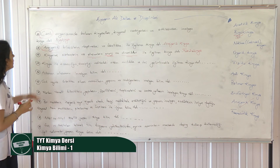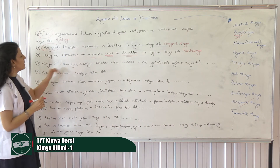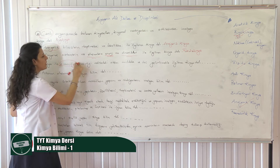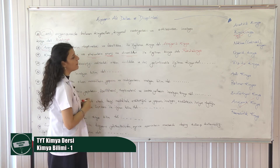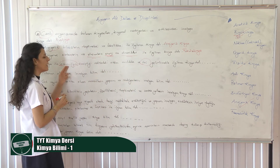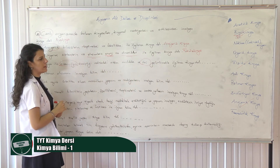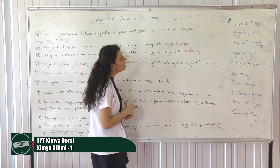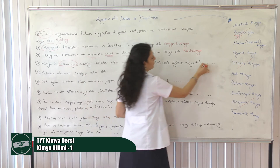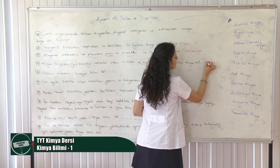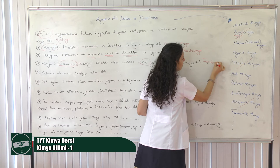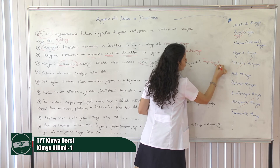Kimya ile eczacılığın kesiştiği noktada etken maddeler ve ilaç geliştirmekle ilgili bir kimya dalı var. İlaçla ilgili diyorsa ve eczacılık demiş zaten — bunların ikisi birbiriyle bağlantılı. Bu kimya dalı farmasötik kimya olur. Farmakoloji zaten ilaç bilimi demek, farmasötik kimya da buradan gelir.